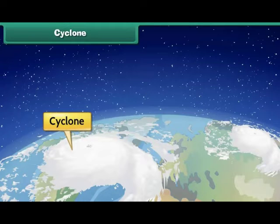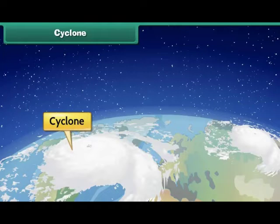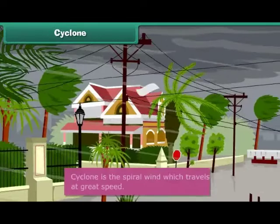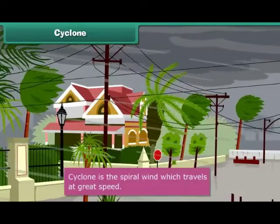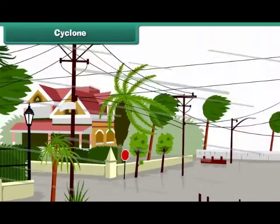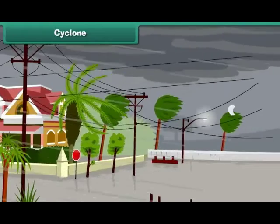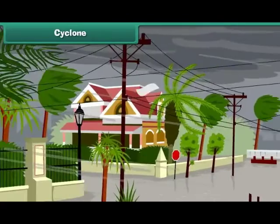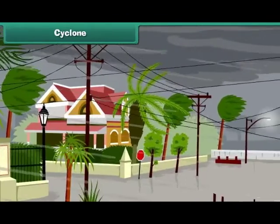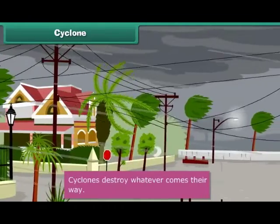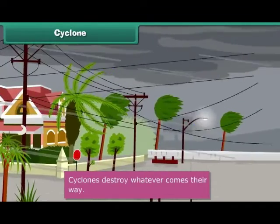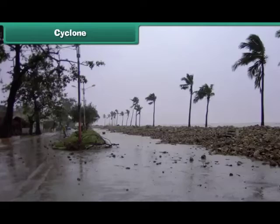Do you know what a cyclone is? In a cyclone, the spiral wind travels at great speed. Strong winds travelling with very high speed uproot trees, houses, and electric poles and destroy everything in their way. Cyclones occur specially in coastal areas.